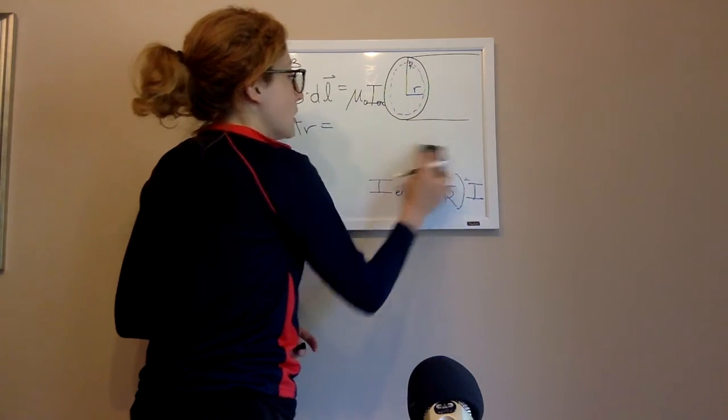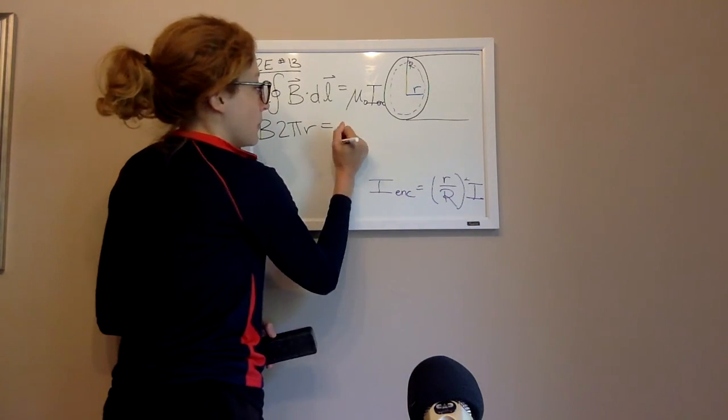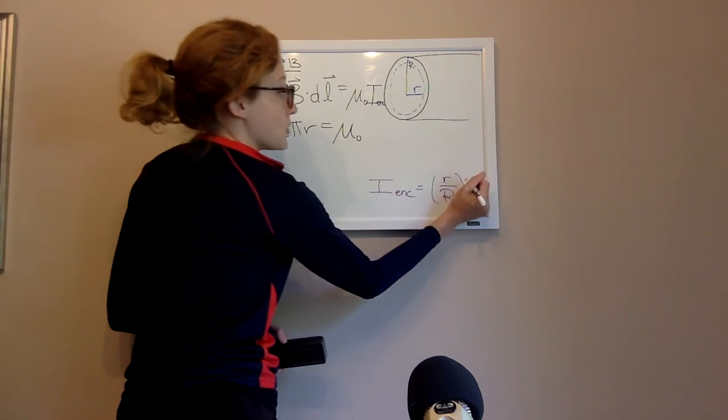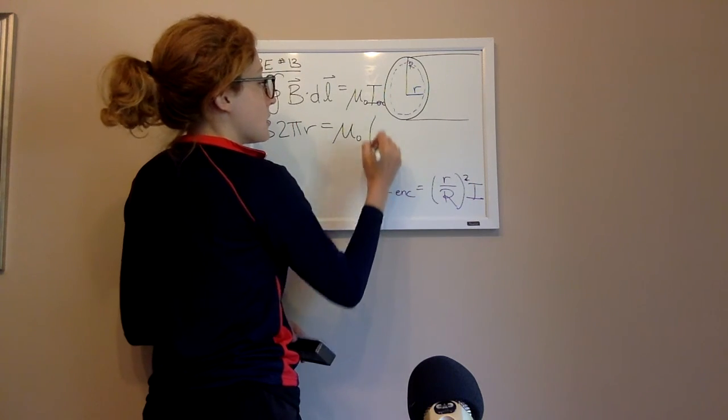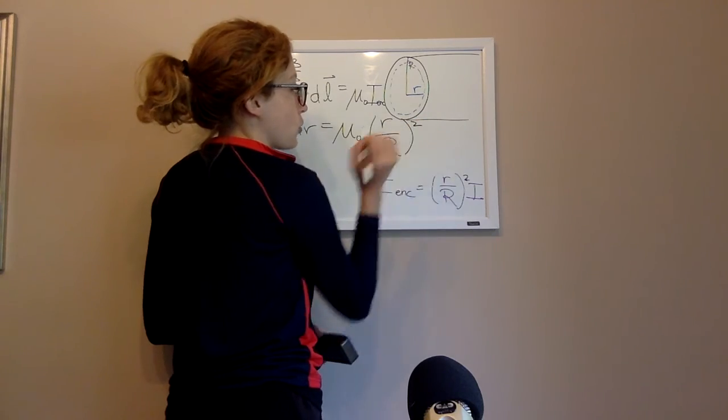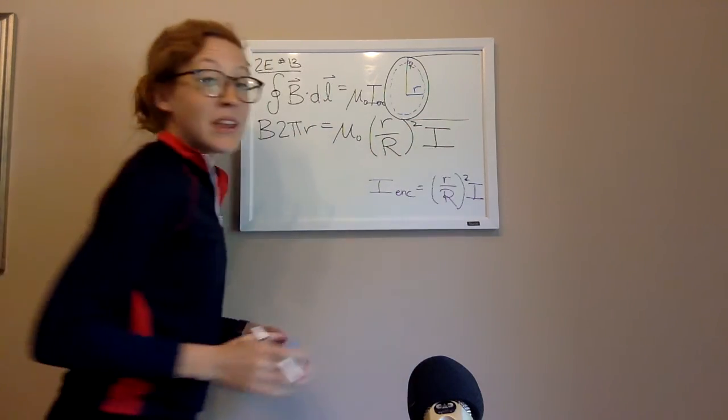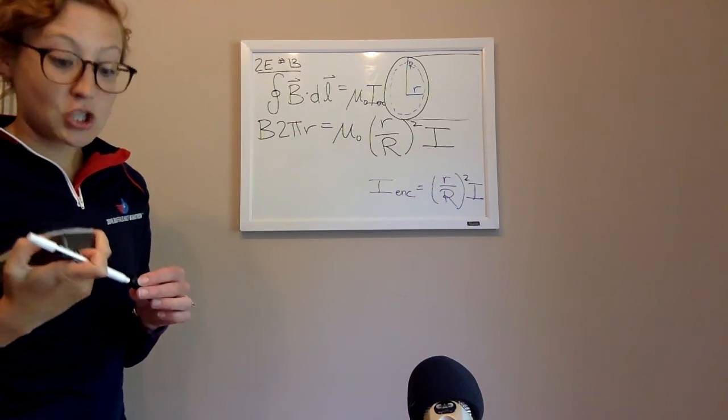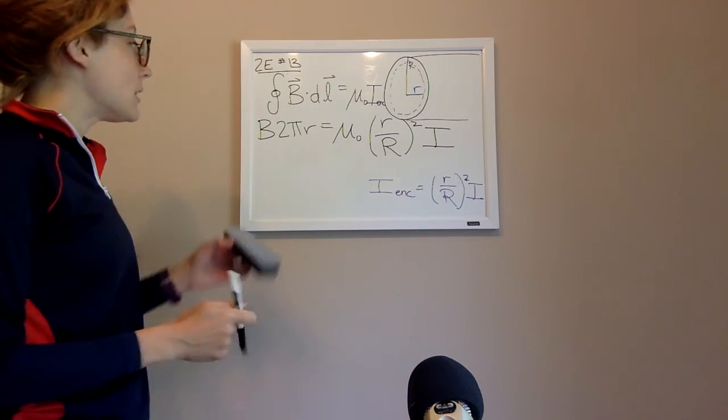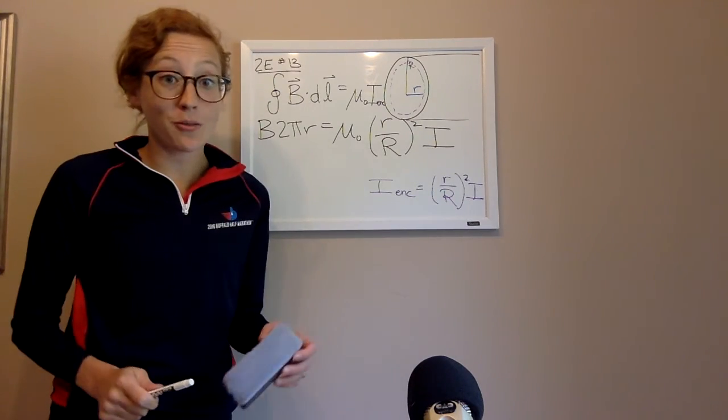And that's going to equal mu naught times I enclosed, which is little r over big R squared times I. And at this point, now it's actually super straightforward.